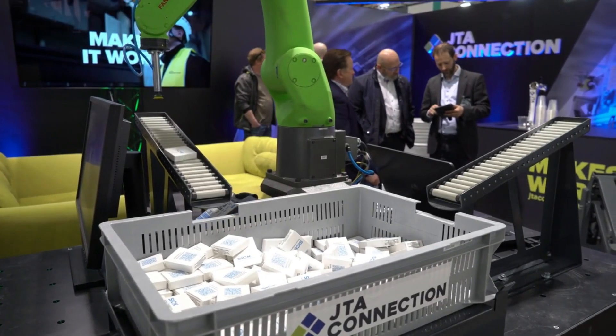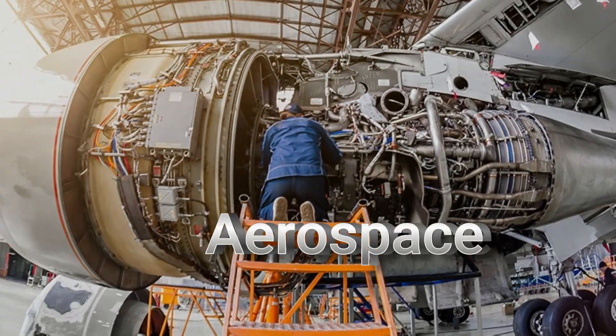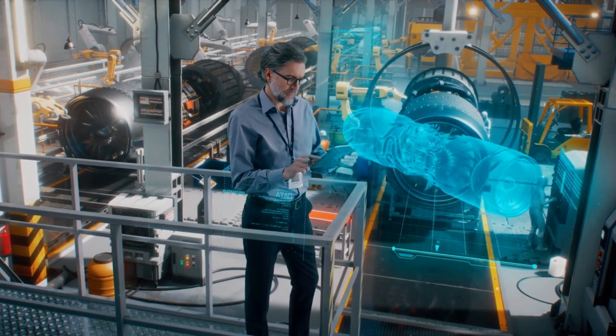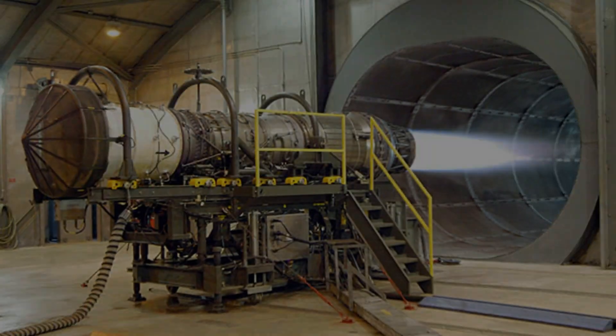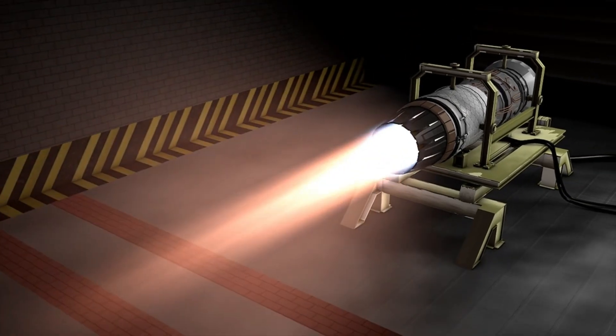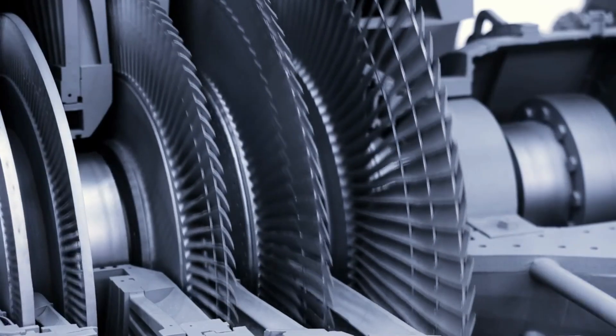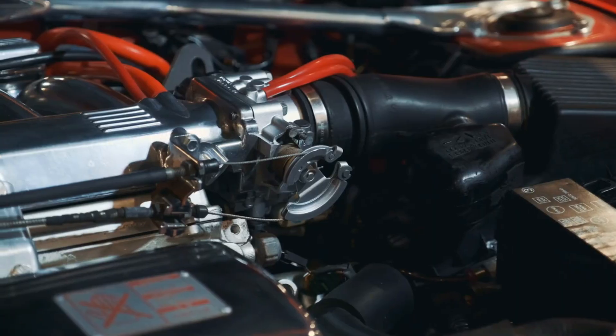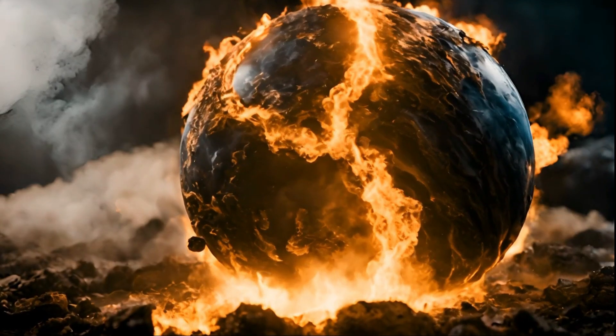Rhenium is a crucial component in aerospace applications due to its exceptional properties. It is often used in superalloys for jet engine components such as turbine blades, nozzles, and combustion chambers. Rhenium's high melting point, 3,180 degrees Celsius, and excellent heat resistance make it ideal for withstanding the extreme temperatures and harsh conditions experienced in jet engines.